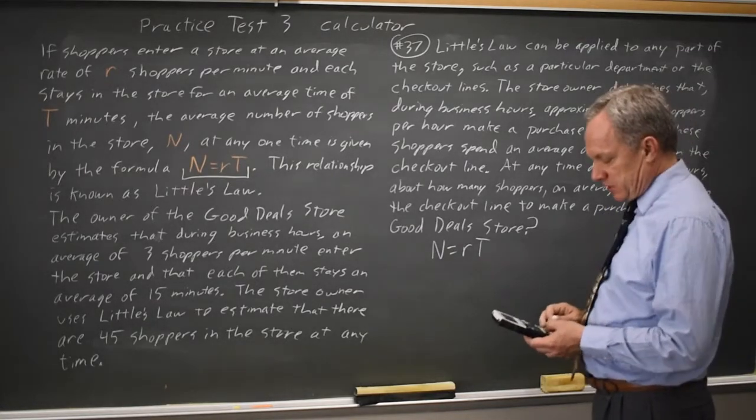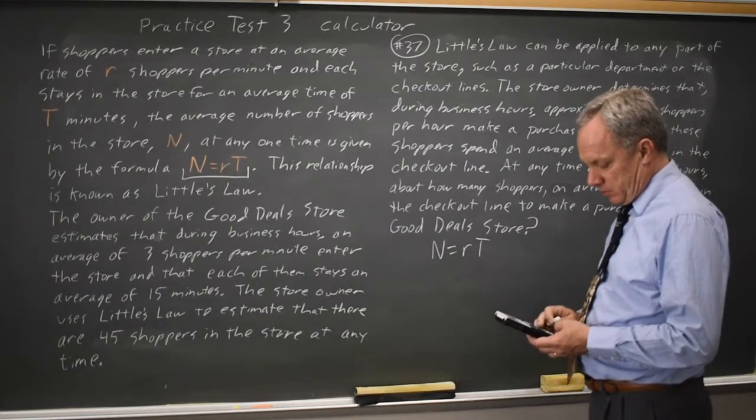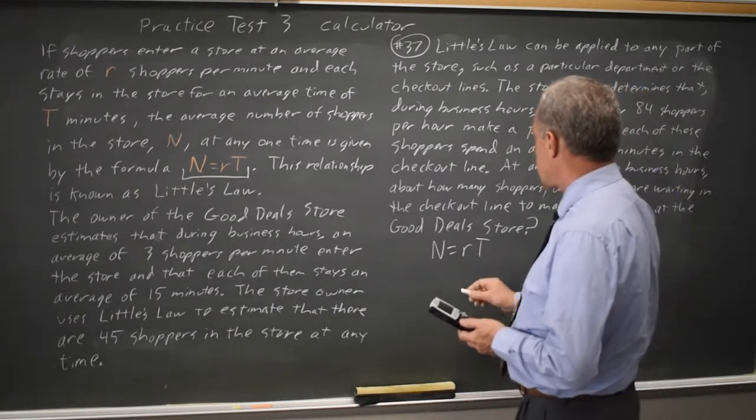So I'm going to do 84 over 60 on my calculator and I get 1.4 is r.